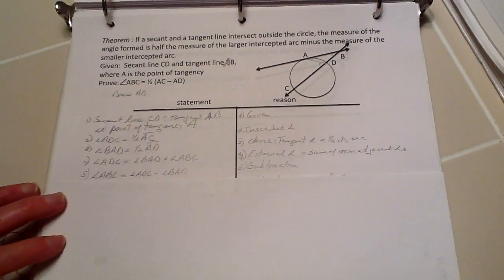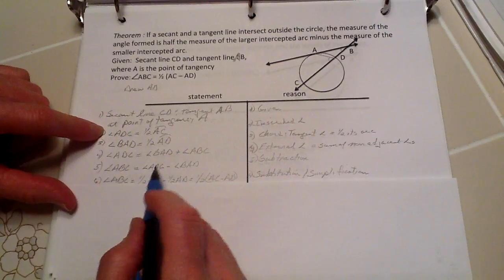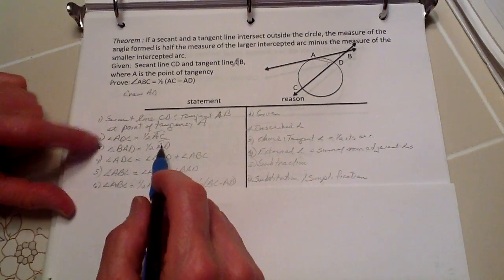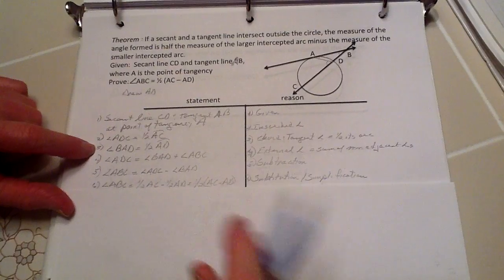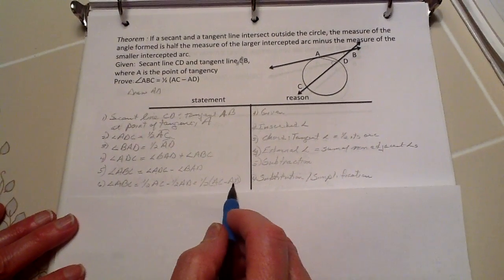Now, if I substitute the arcs I have for this, bring this one down to here and this one down to here, substitute those in, and then I simplify by pulling this one-half out,